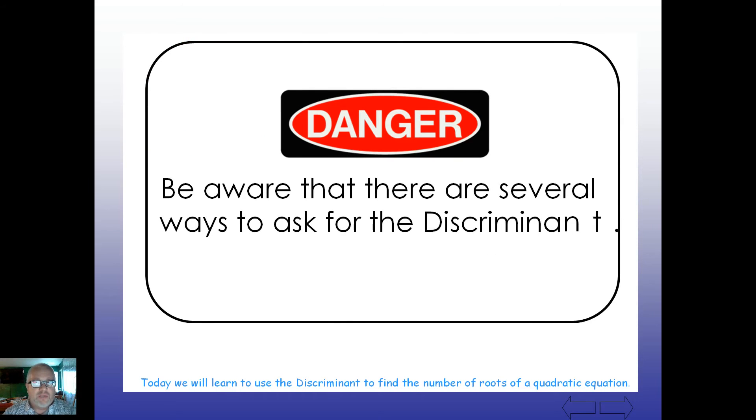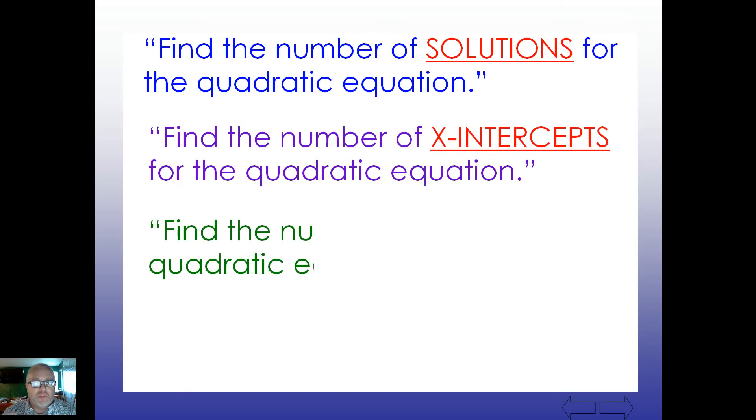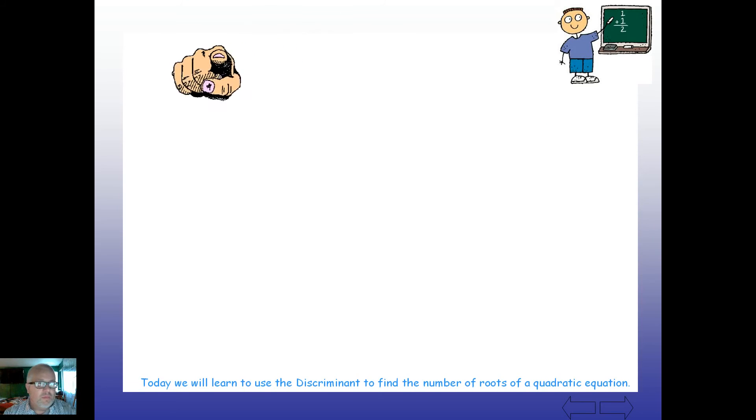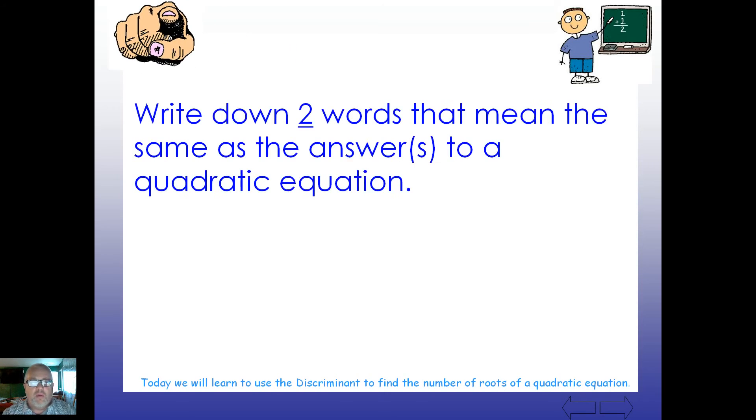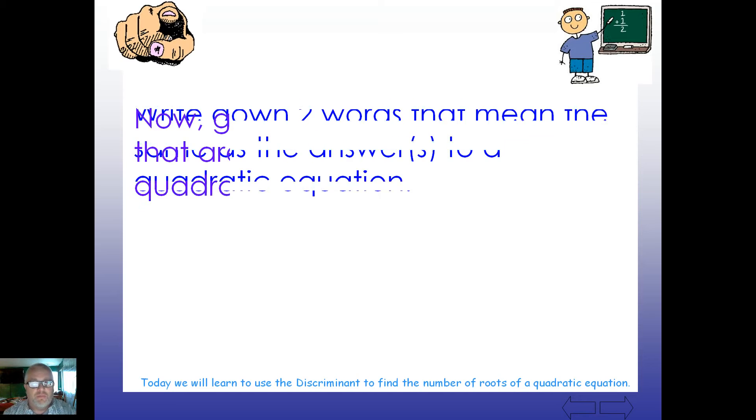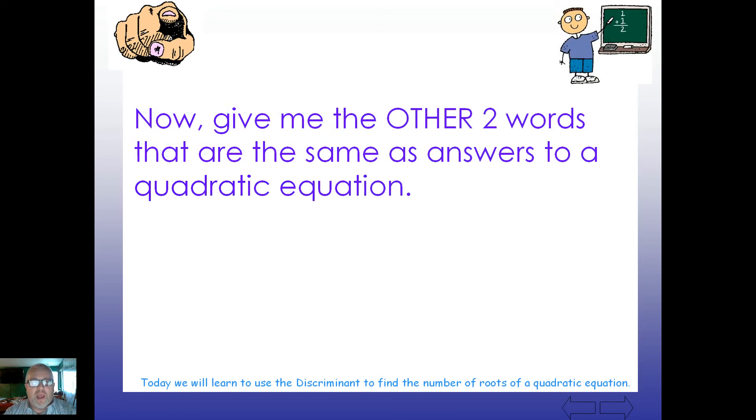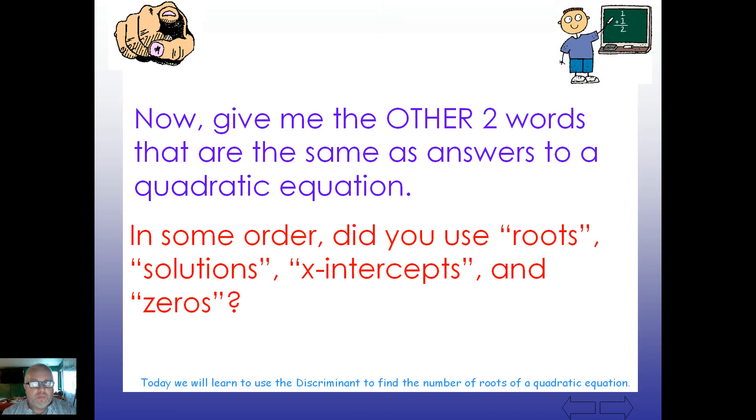All right. Be aware that there are several ways to ask for the discriminant. So, they may ask you to find the number of solutions, find the number of x-intercepts, find the number of roots, or find the number of zeros for the quadratic equation. Let's see. In your notes there, or at least mentally, give me two words that mean the same as an answer to a quadratic equation. So, give me two words. Think of the two of those four words. And now, come up with the other two. Let's see if you're comfortable with all four of them. So, in some order, did you use the word roots, or solutions, or x-intercepts, or zeros? That would be the four words you're going to need to get used to.